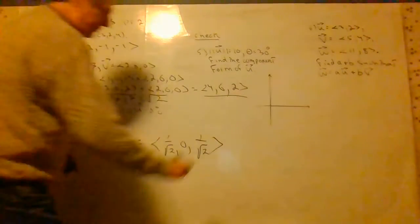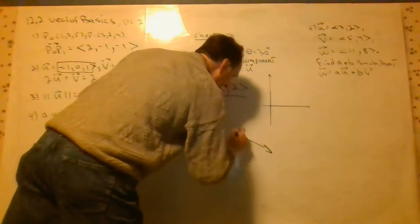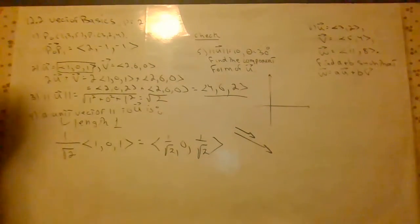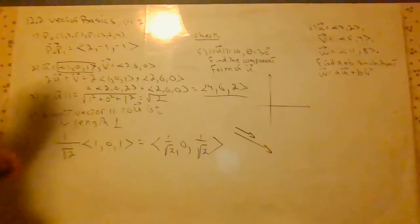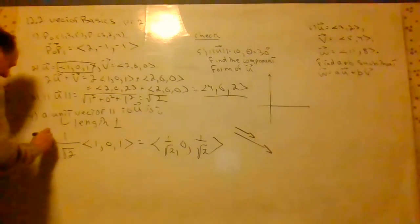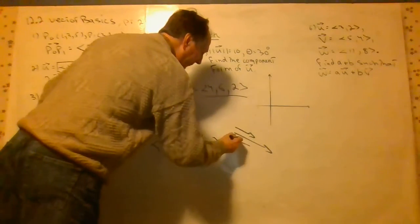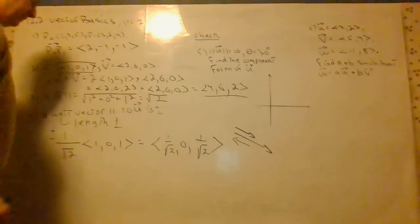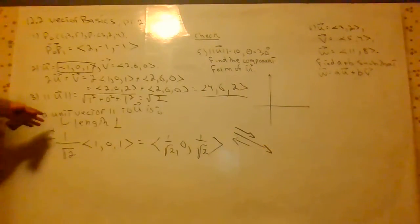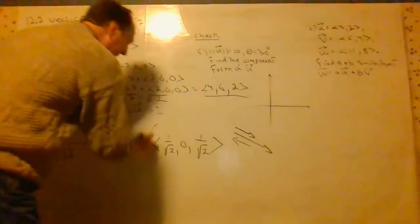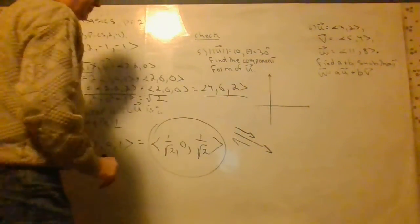In effect, what we did is we took this vector and we shrank it down. We divided it by 1.4. Now, this is one answer. We actually could have had plus and minus, so a vector in the opposite direction would have sufficed as well. It could have been either one of those. Now, as far as a check, let's find out how long this vector is.